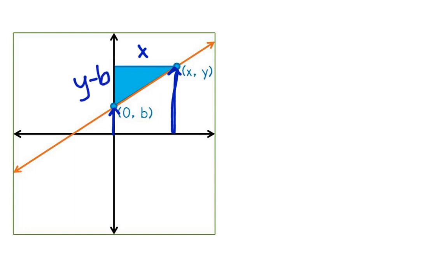When we set this up as a ratio of rise to run, we would get (y minus b) over x. And again, we know that that is supposed to be equal to the rise over run in the similar triangle we saw in the previous screen, which was m over 1.